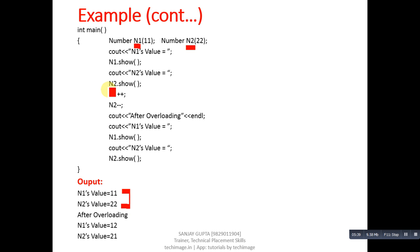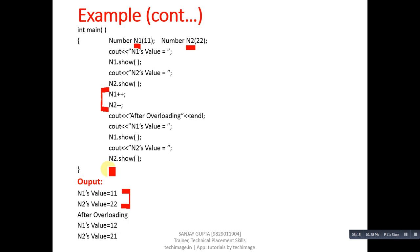Then n1++ calls the ++ overloaded function and n2-- calls the -- overloaded function. These operators are applied on user-defined objects, so they must be overloaded. After calling n1.show(), the value is 12 — increased by 1. After calling n2.show(), the value is 21 — decreased by 1. So before overloading the values were 11 and 22; after, they are 12 and 21.